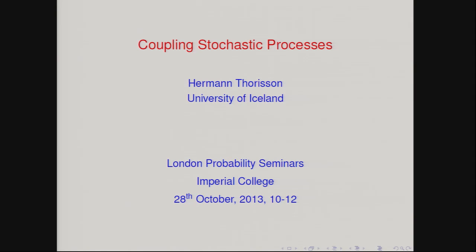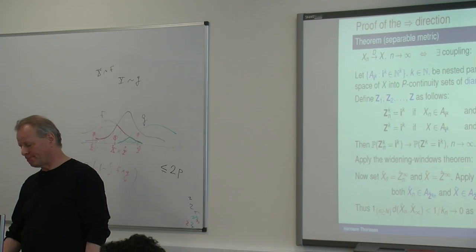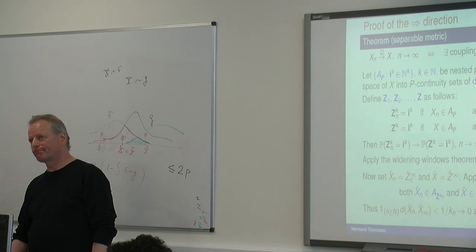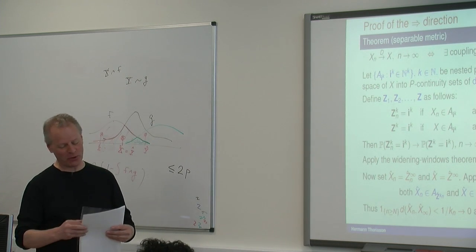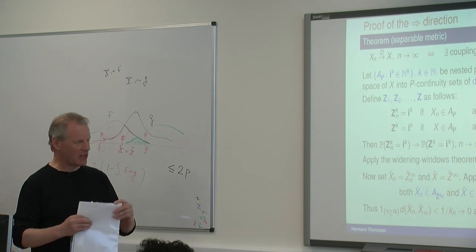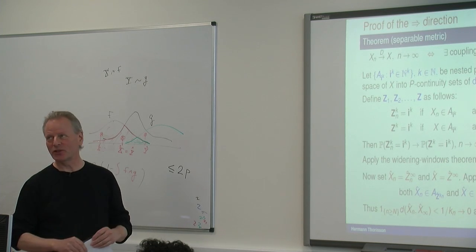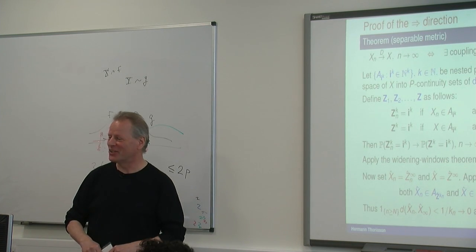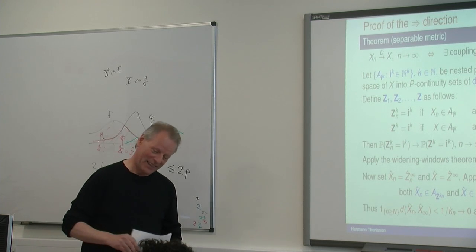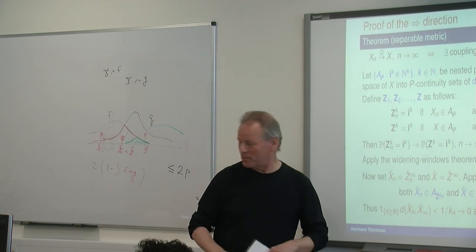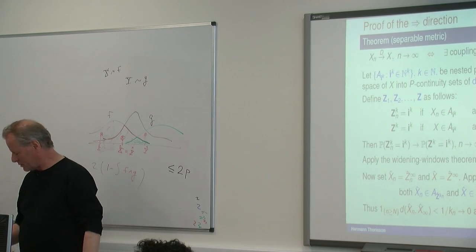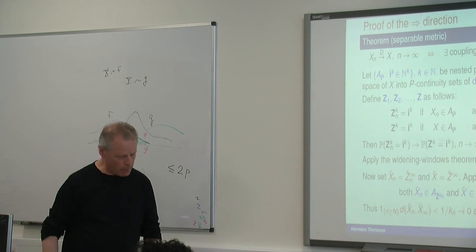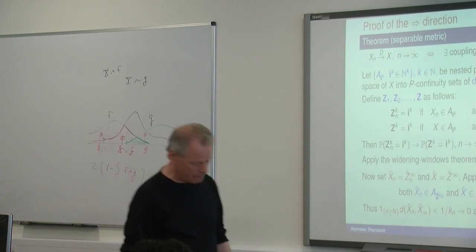So now it is stochastic processes theory — general theory of stochastic processes, not really, because that's what the French did. So it's general coupling theory of stochastic processes, which is closer to the truth, but not the full truth. It's a particular kind of coupling, or couplings plural, that I will be looking at.